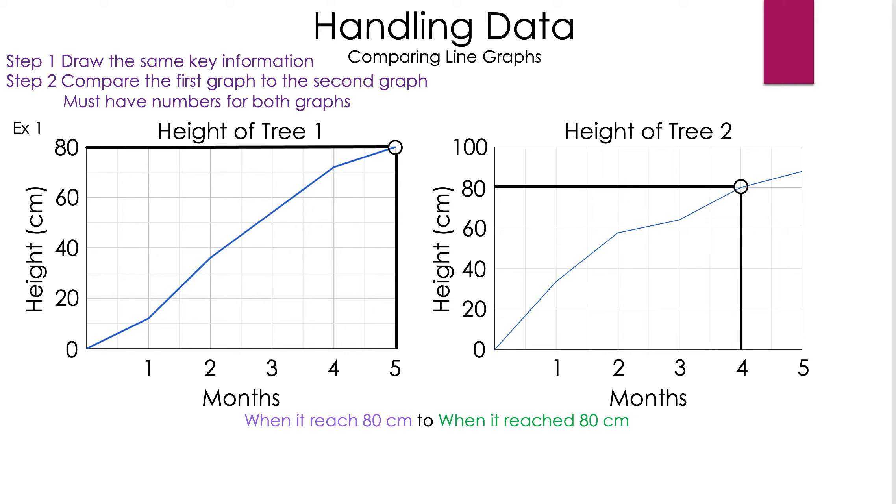We're going to write that out. On the left it is at month 5, and on the right it is at month 4. Let's look at a sentence you could write: tree 1 took 5 months to reach 80 centimeters while tree 2 took 4 months. And there you go.